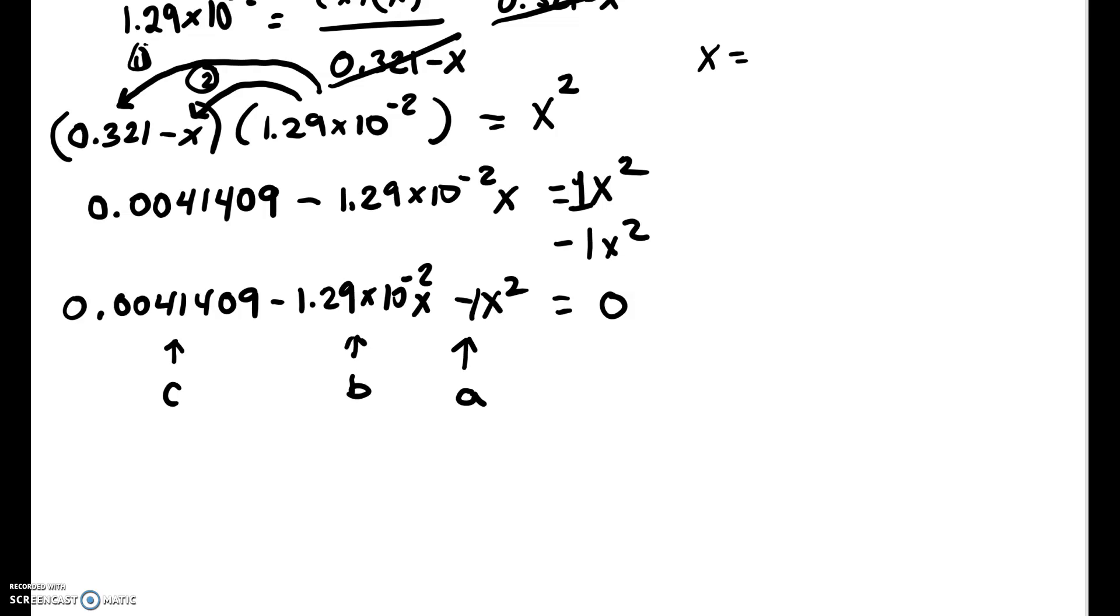So here's our formula. Here it is. X equals negative B plus or minus square root B squared minus 4AC all over 2A. Boy, does that really mess people up when they are solving the quadratic formula. They don't divide the entire numerator by 2A, and that's really important. So we can use this formula and just plug in wherever there's a C, we can put in our 0.0041409. The A is negative 1, and the B is negative 1.29 times 10 to the negative 2.